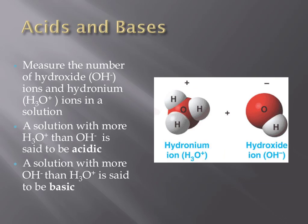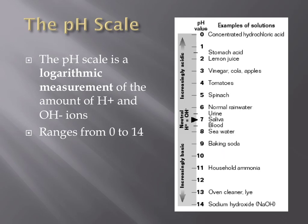Acids and bases are types of solutions. One way to describe materials as acids or bases is by looking at the concentration of hydronium ions and hydroxide ions. Solutions that have more hydronium ions than hydroxide ions are referred to as acidic, while solutions that have more hydroxide ions than hydronium ions are called bases. Solutions with an equal number of both are referred to as neutral. The pH scale ranges from 0 to 14 — substances with a pH less than 7 are acids, greater than 7 are bases, and a pH of exactly 7 is neutral.